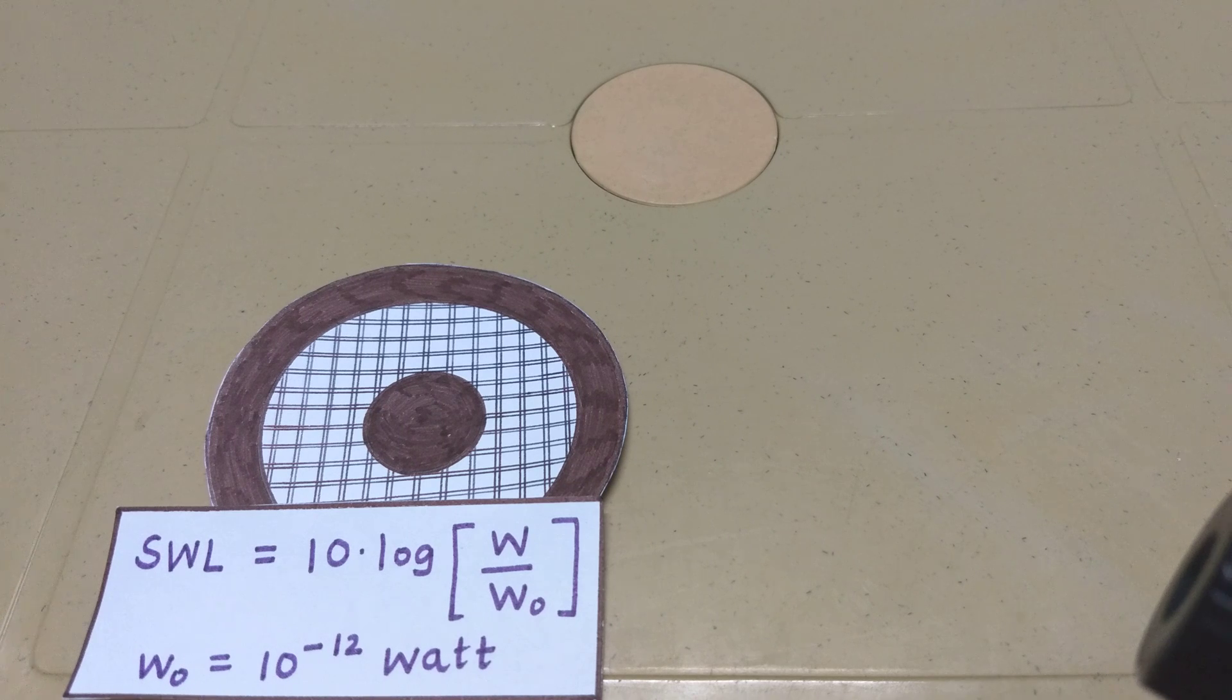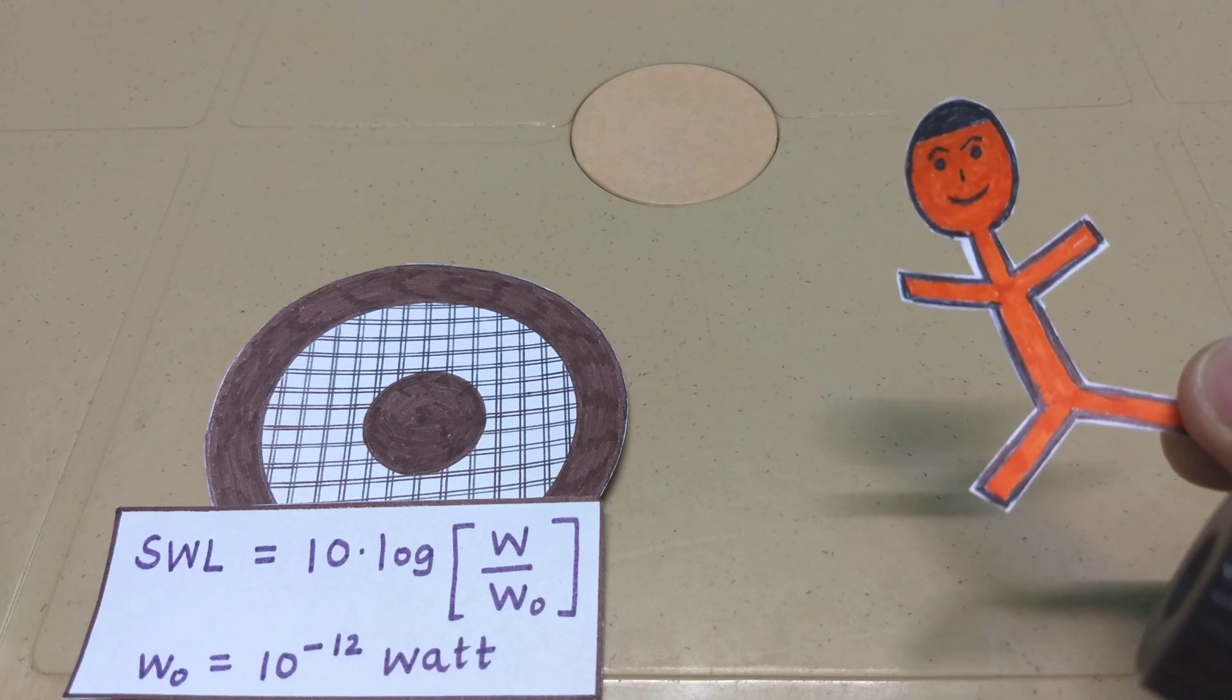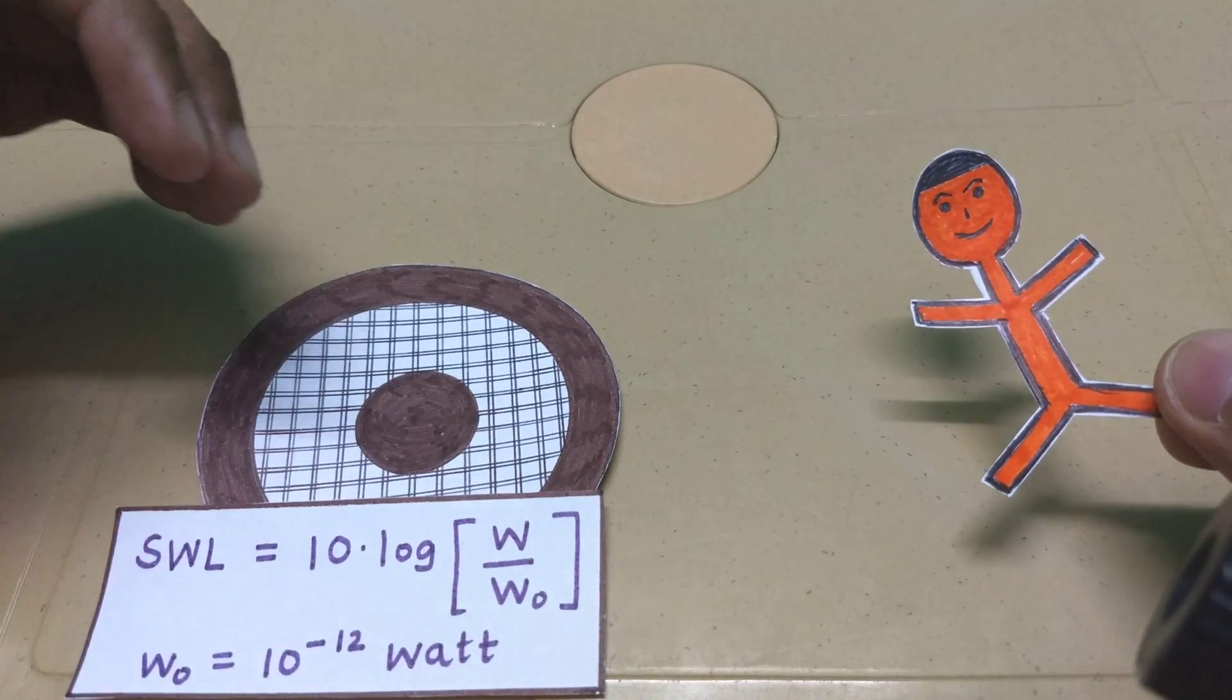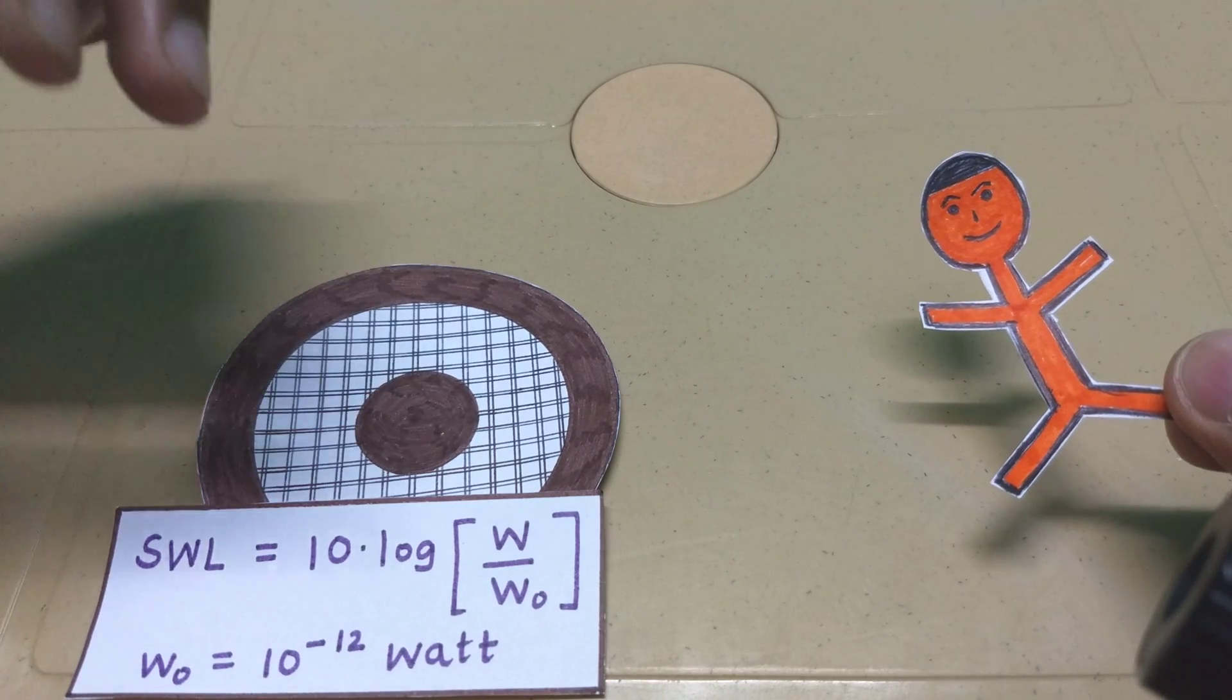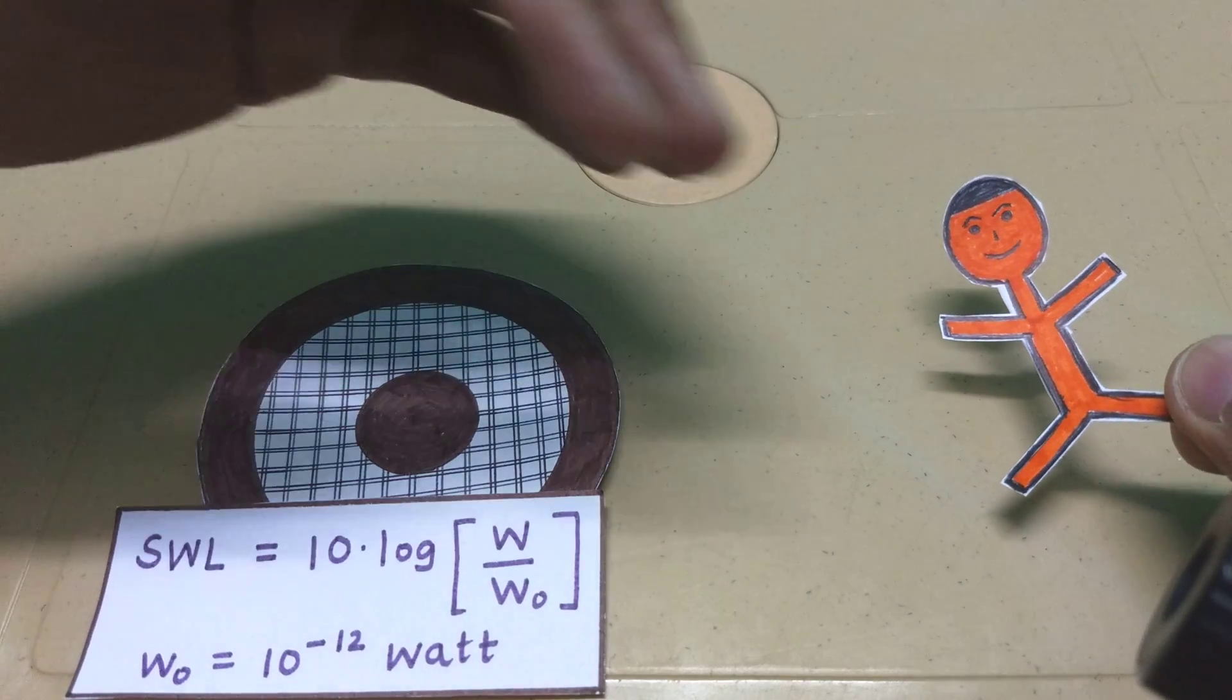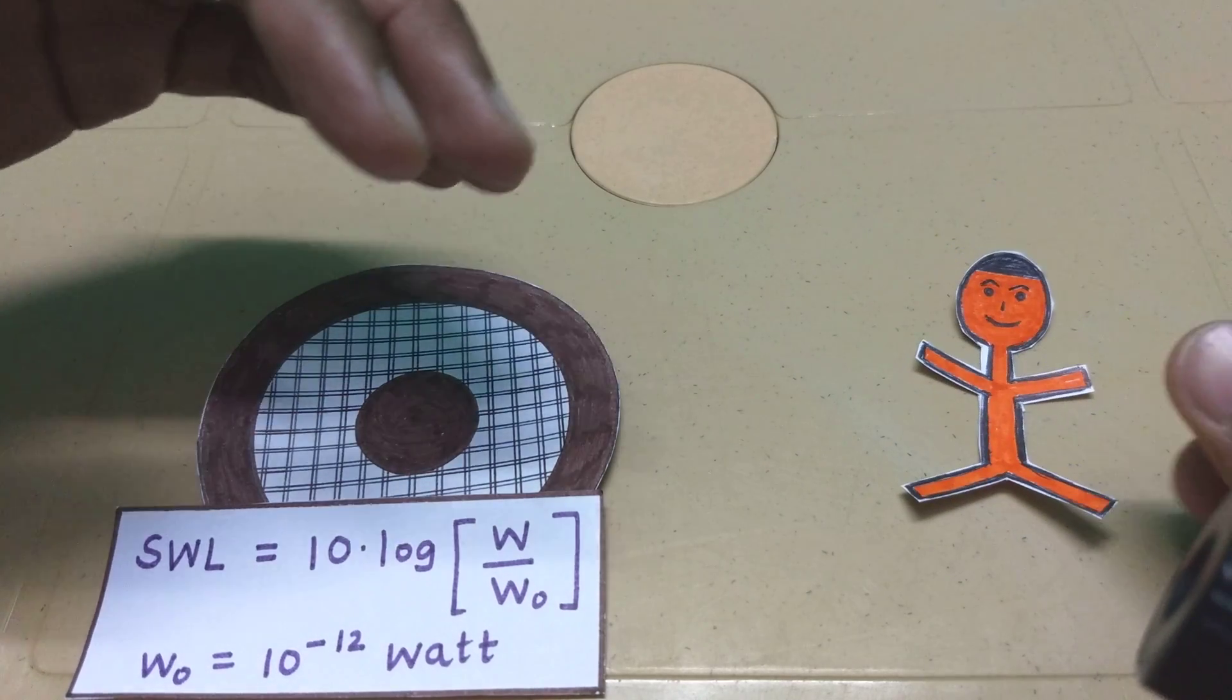For example, let's consider an observer, let's say Bob. Now consider the speaker being switched on. What Bob is gonna hear is the pressure fluctuations created by the diaphragm of the speaker. So what Bob's gonna register is the sound pressure level.